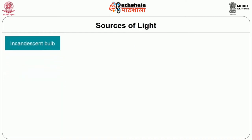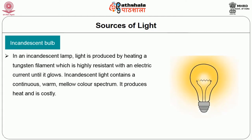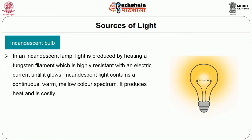Incandescent light: In an incandescent lamp, light is produced by heating a tungsten filament, which is highly resistant, with an electric current until it glows. Incandescent light contains a continuous warm, mellow color spectrum. It produces heat and is costly. This lighting is flattering and best for warm mood lighting. These lamps are available in a wide range of voltages. As the tungsten burns off, the halogen reacts with the tungsten and creates a bright light.